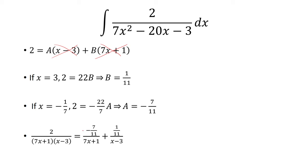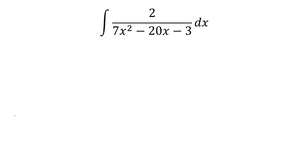And now I can rewrite this fraction as negative 7 over 11 all over 7x plus 1 plus 1 over 11 all over x minus 3. So now I'm going to be integrating these two new fractions.